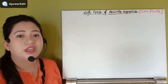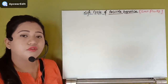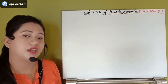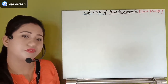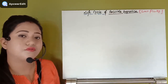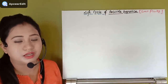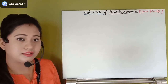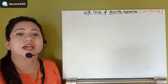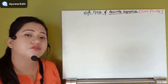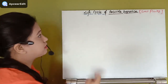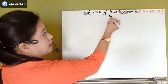In the last video we discussed the phylum Platyhelminthes and its general characteristics. Now we will discuss a specific species of this phylum that is actually a parasite — the liver fluke, scientifically known as Fasciola hepatica.